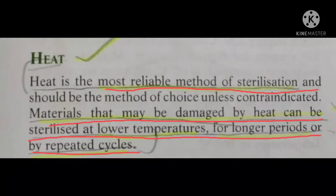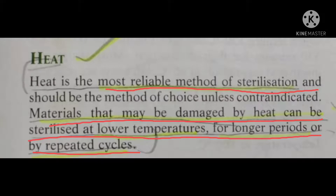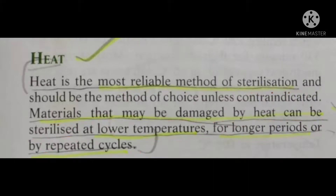The third physical method is the use of heat. Heat is the most reliable method for sterilization. Some materials are readily damaged by heat, so for sterilization of such materials we need to use lower temperatures and keep them for longer cycles.